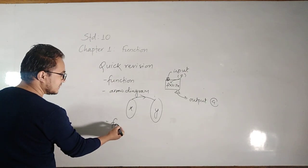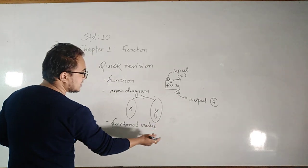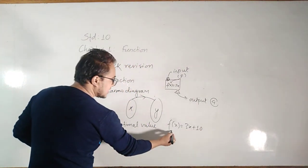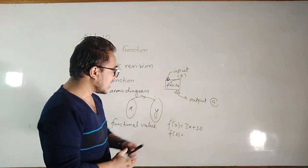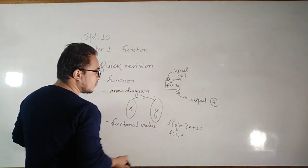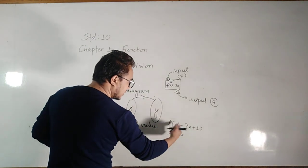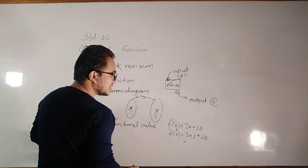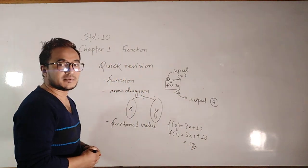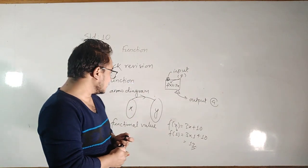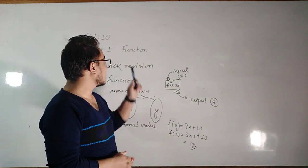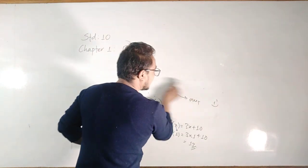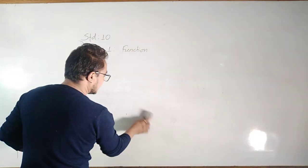Next, how to represent a function in arrow diagram. In arrow diagram, we use two ovals where we put inputs on one side and outputs on the other, and they are joined by arrows. You have also learnt functional value. If f(x) = 3x + 10, then functional value means: what is f(1)? That means if we substitute x by 1, what will be its output? Substitute x by 1: 3 × 1 + 10 = 3 + 10 = 13. This is called functional value. You have already learnt the types of functions as well. For today's chapter, we need this much from the previous class.